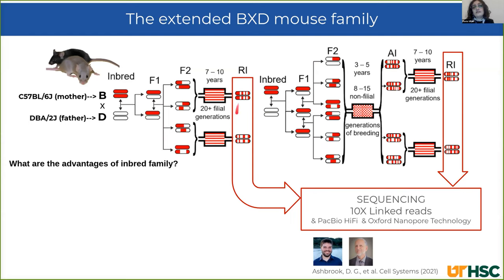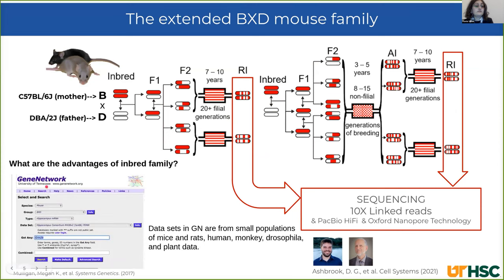What are the advantages of inbred families? The first set of BXD recombinant inbred strains was used to map Mendelian traits, but now BXDs are used to map complex traits such as cancer, immune system, brain structure, and so on. The BXD phenome includes thousands of quantitative traits present in GeneNetwork — a group of linked data and tools used to study complex networks of genes, correlations between genotype and phenotype. Heritable traits in BXD mice can be mapped with high power and precision.